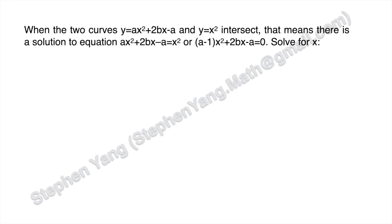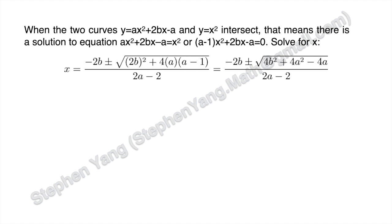And then you solve for x. By the quadratic formula, you get x equal to negative 2b plus or minus the square root of 4b squared plus 4a squared minus 4a, all over 2a minus 2.